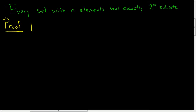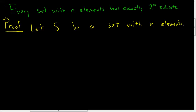Let S be a set with n elements. We're going to show that S has exactly 2 to the n subsets.